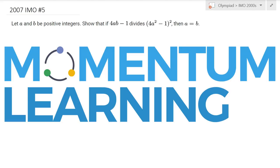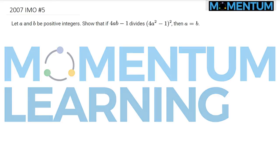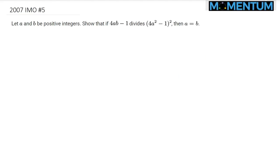Consider the following 2007 IMO Problem 5. Here is a view of this number theory problem. We are given a divisibility condition, and we would like to show that A and B are actually equal if this divisibility condition holds.